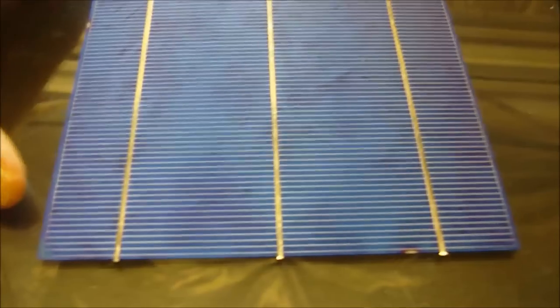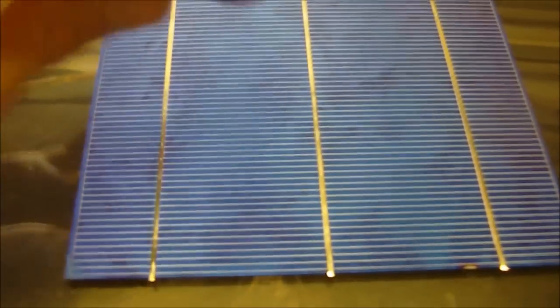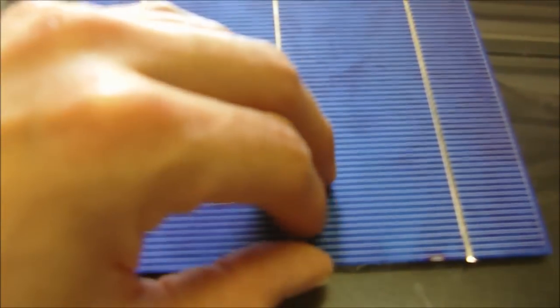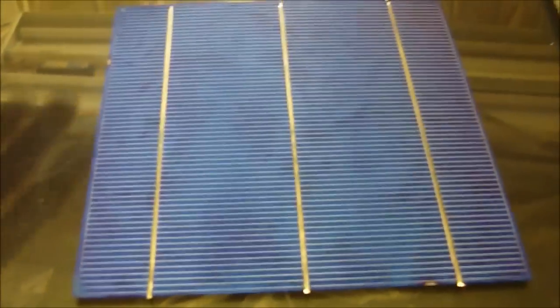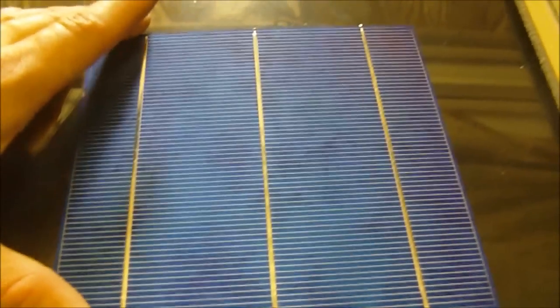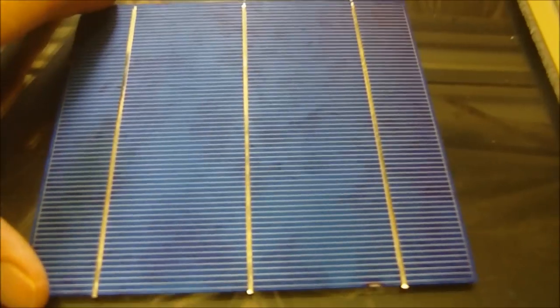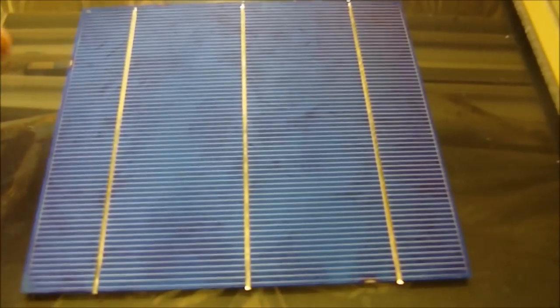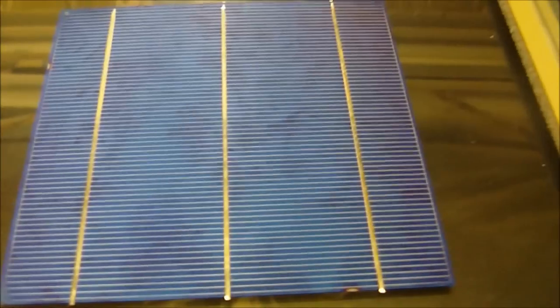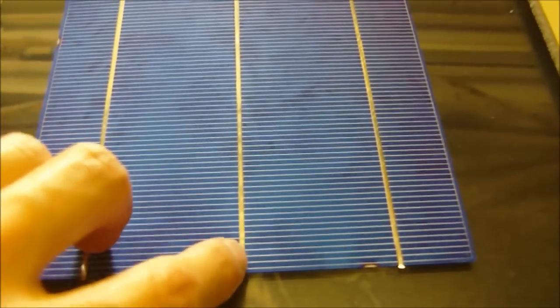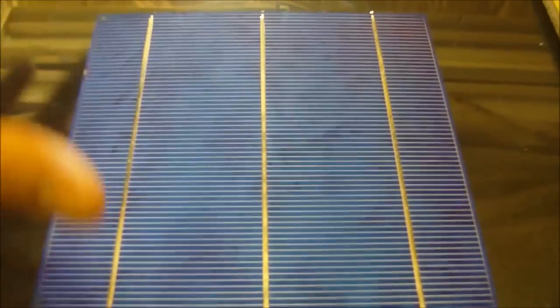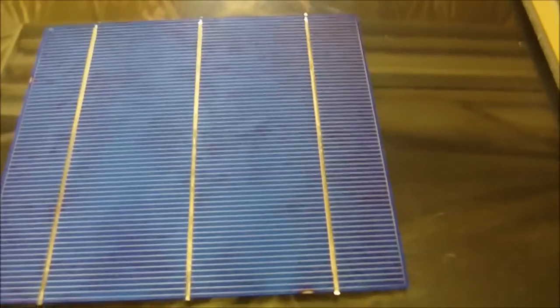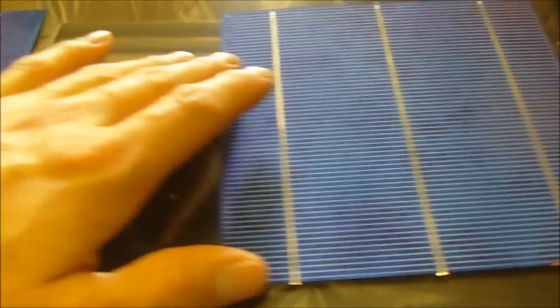This one here is a short tabbed cell. It has been tabbed, but it's been cut short. They were cut short because they were taken apart from a panel or array of cells that didn't meet inspection - the colors were wrong, or a tab came unsoldered. So these were cut up and then sold as short tabbed cells.